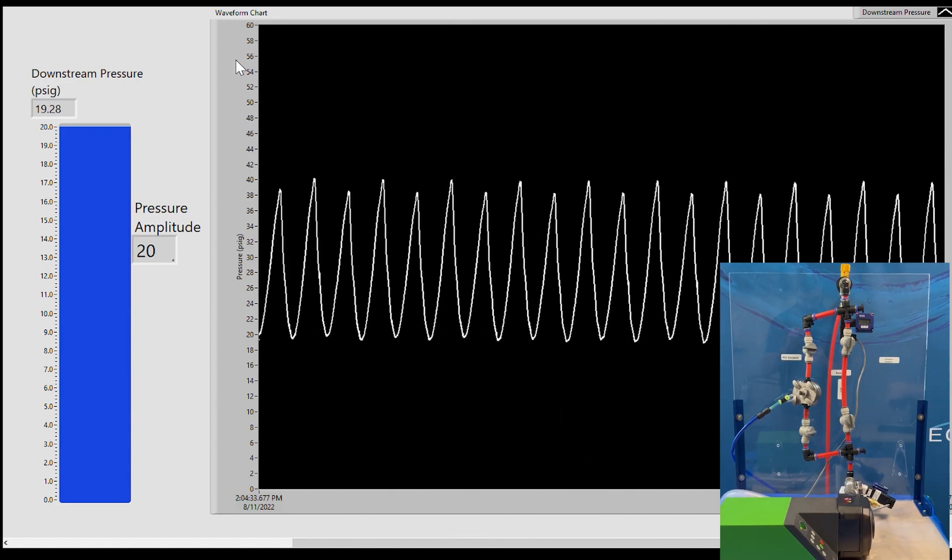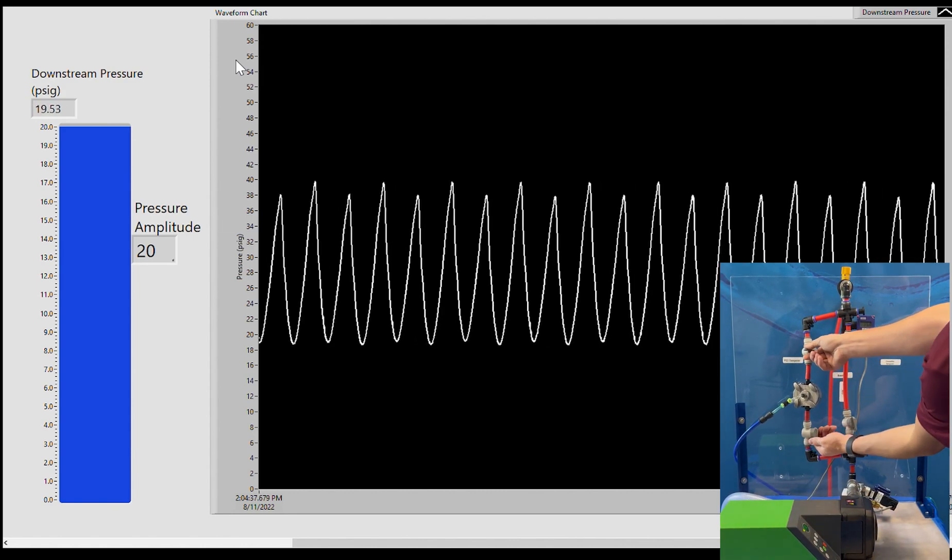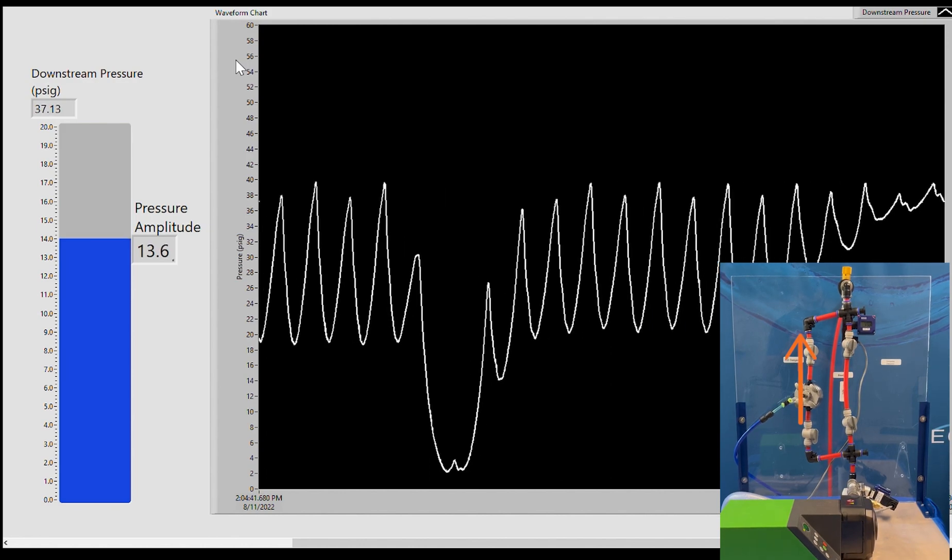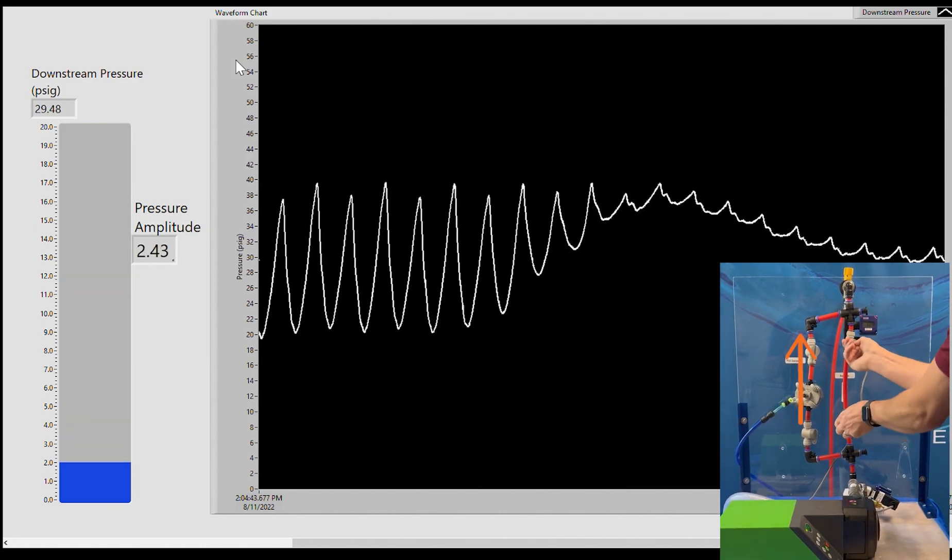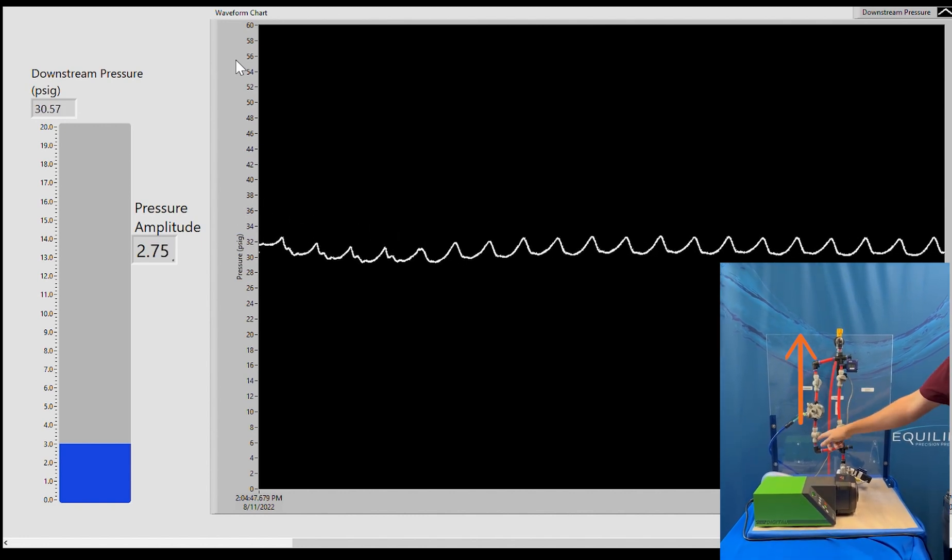We'll now move over to what the Equilibar can do to dampen that pulsation. Now that the flow is diverted from the base case to the Equilibar case.